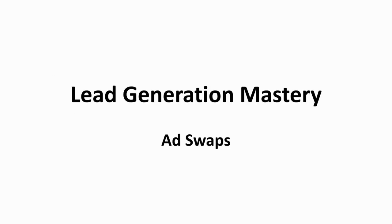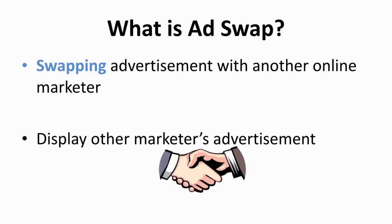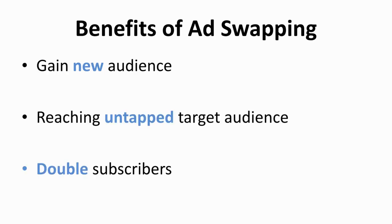We've reached another part of Lead Generation Mastery, where associates play a major part in generating your leads. Ad swapping is exactly what it sounds like — it is where two online marketers swap ads with each other. When you make a deal for an ad swap with another marketer, you will display their advertisement in your website, and in return, they would do the same in their advertisement space. One of the benefits you will gain from an ad swap is gaining a new audience from the other marketer. The other firm has their own subscribers and frequent visitors, and this is how you can reach out to them.